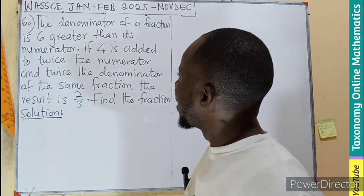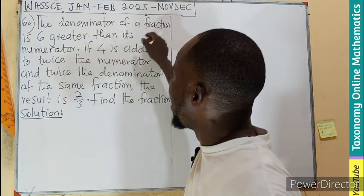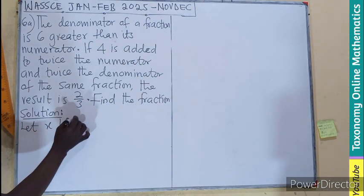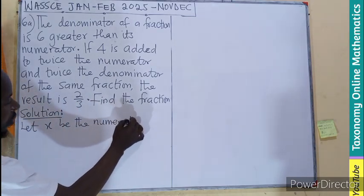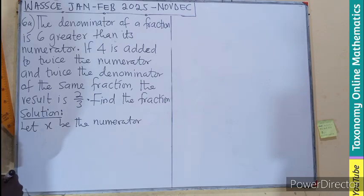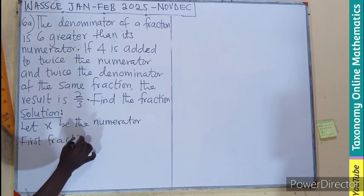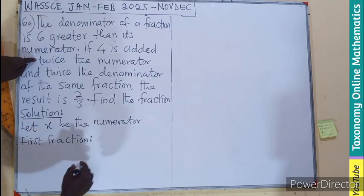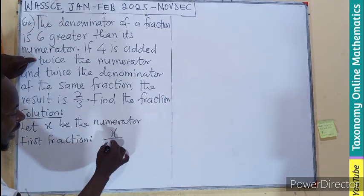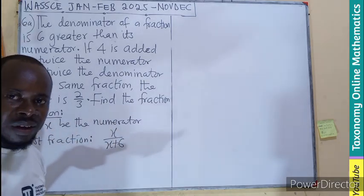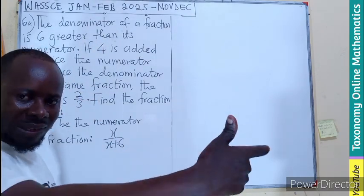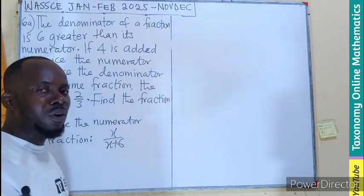So what do we do? We are saying that the denominator is based on the numerator. So we can just say that let x be the numerator. If x is the numerator, what would be the first fraction? The numerator - they said the denominator is 6 more than the numerator. So the numerator will be x, then the denominator is x plus 6. That's the first fraction we can get.